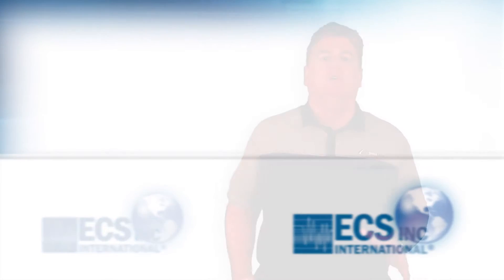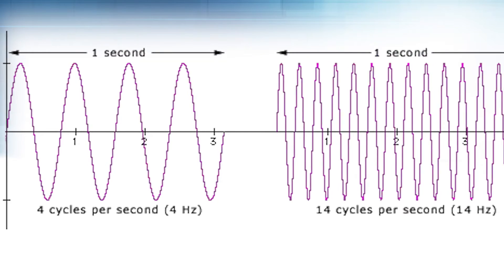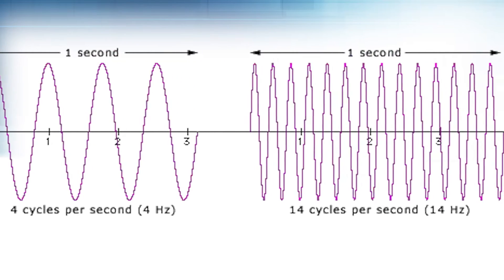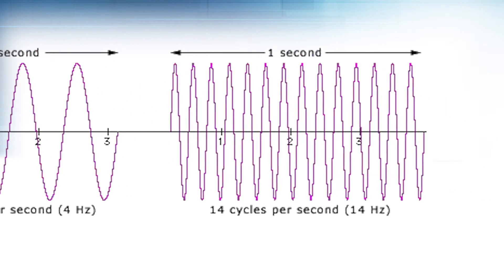An example: frequency describes the number of waves that pass a fixed place in a given amount of time. So if the time it takes for a wave to pass is half a second, then the frequency is two per second, or two Hertz. If 240 waves pass in an hour, the frequency is four Hertz. The faster the cycle repeats, the higher the frequency.